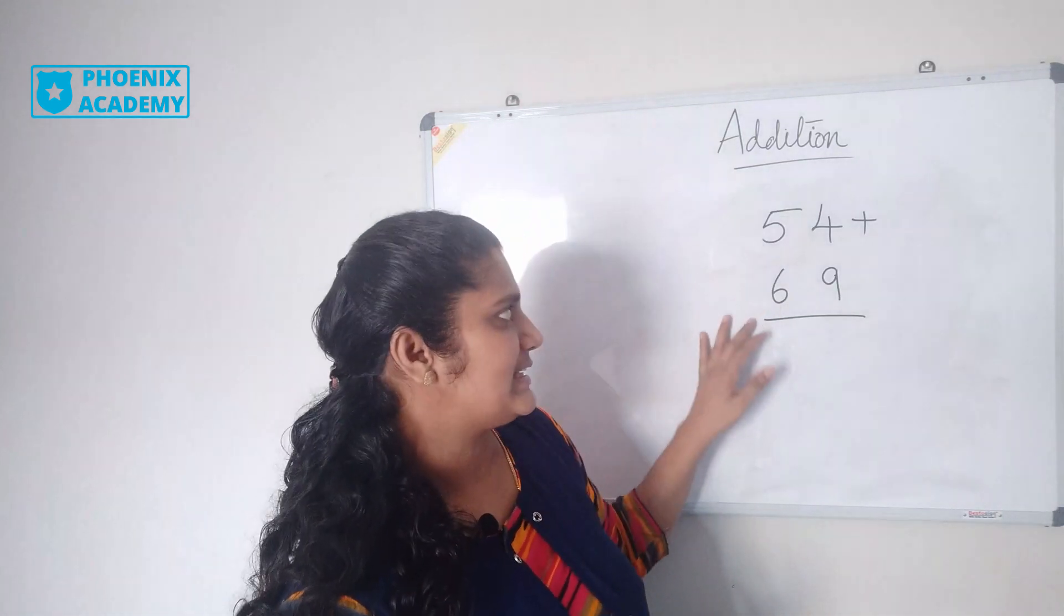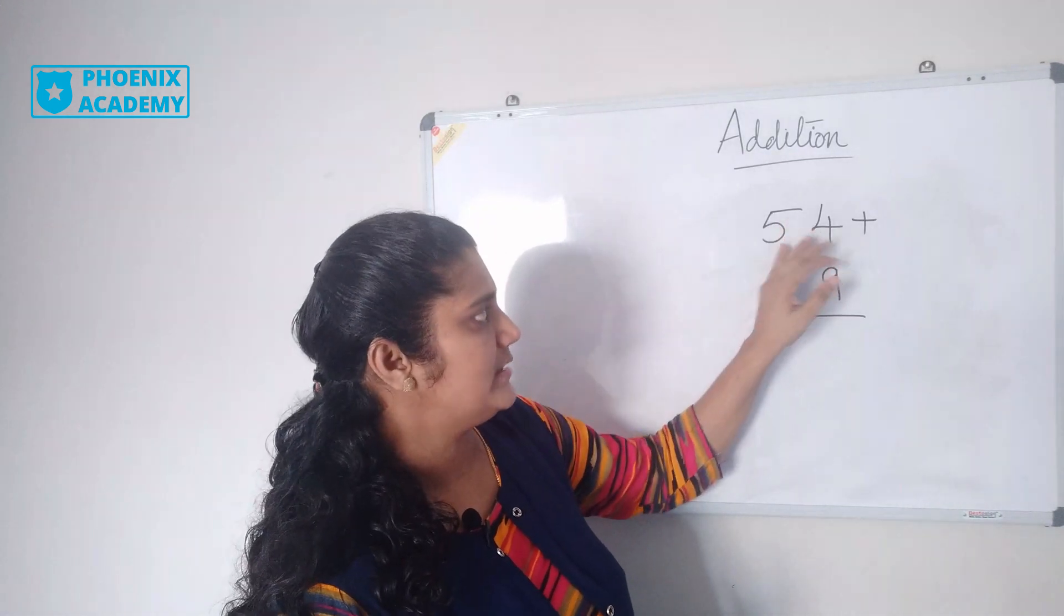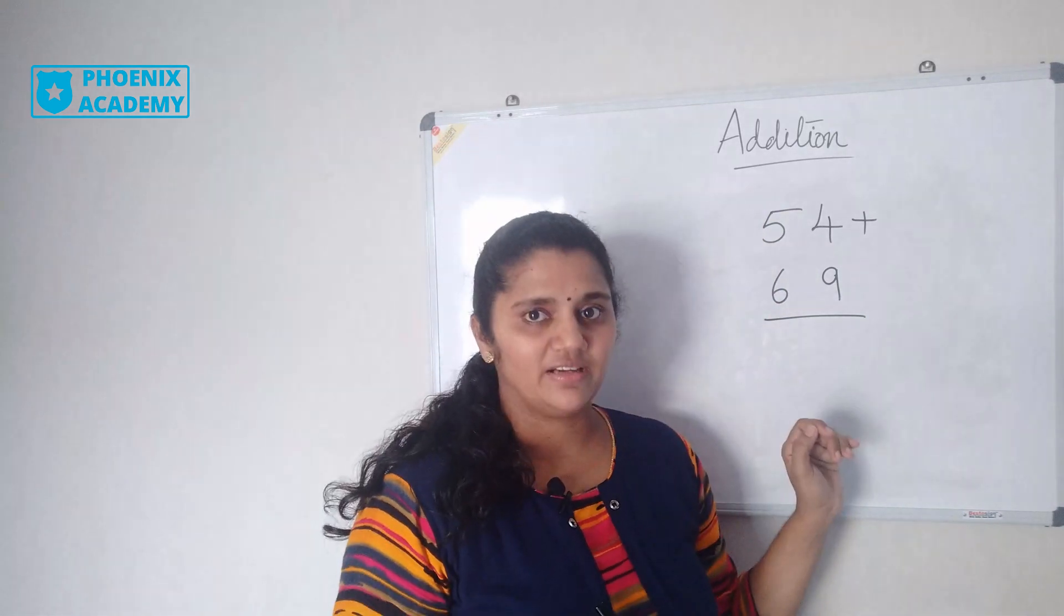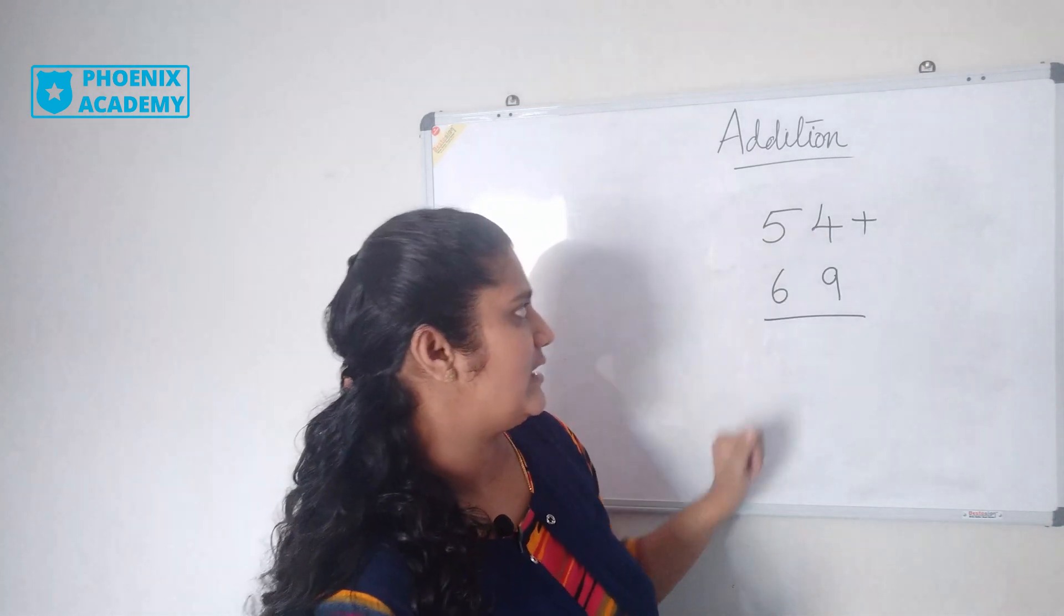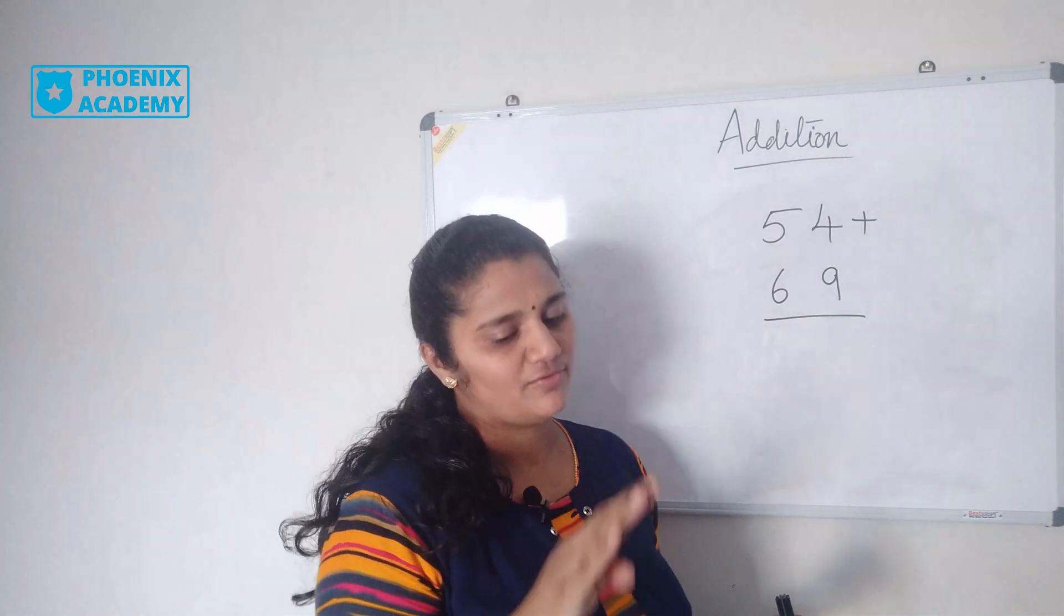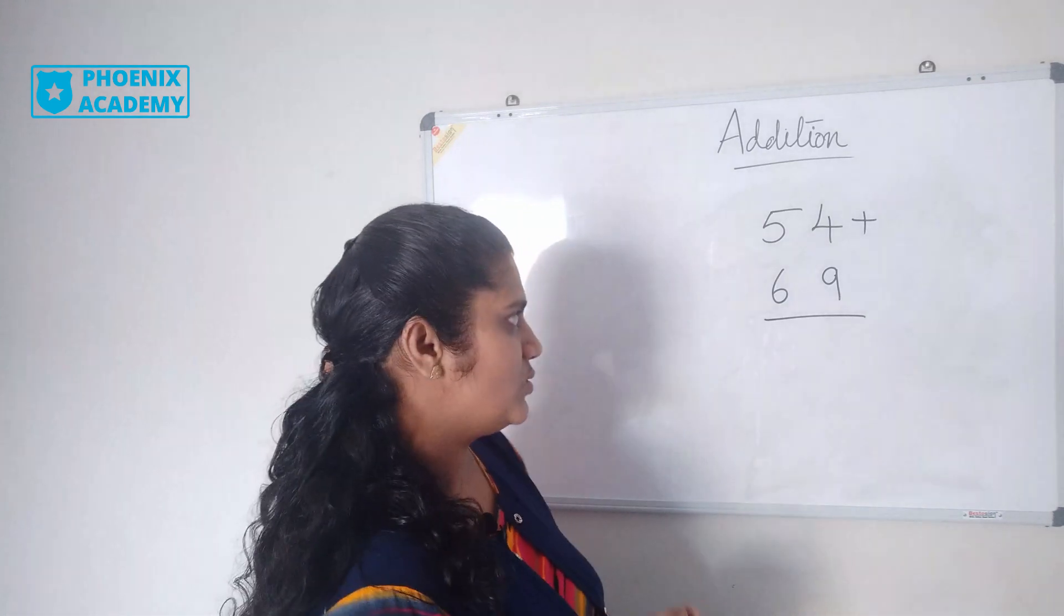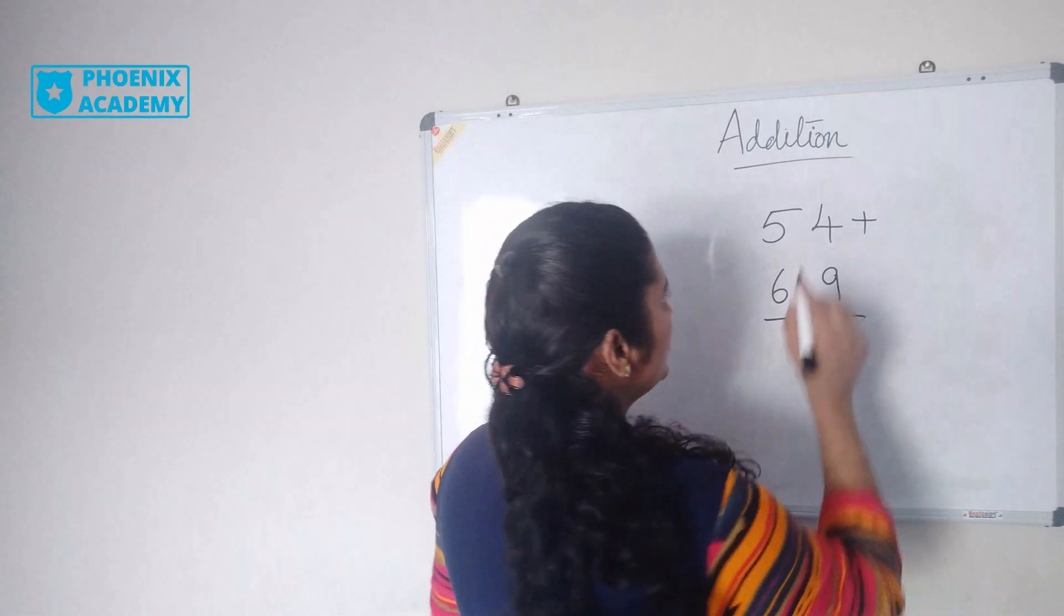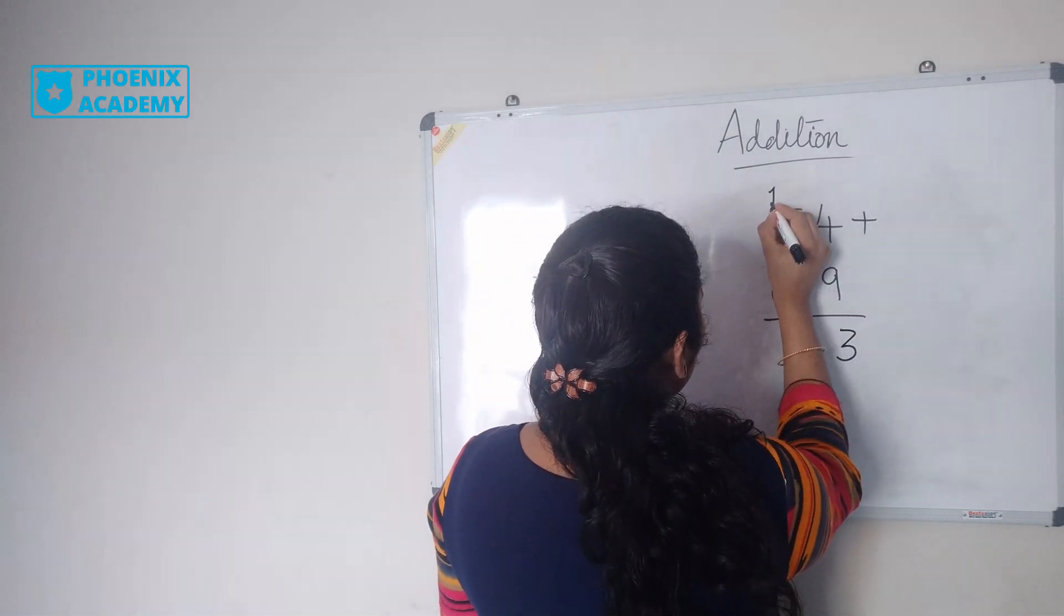Let's try one more example: 54 plus 69. 54 is 4 ones and 5 tens; 69 is 9 ones and 6 tens. Let's add the ones: 4 plus 9. I keep 9 in my mind and count 4 more: 10, 11, 12, 13. So the answer is 13, which is 3 ones and 1 ten. I'll write 3 in the ones place and 1 in the tens place.